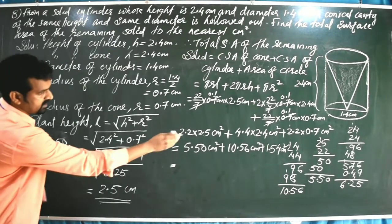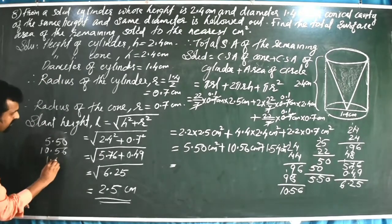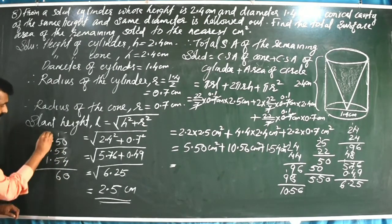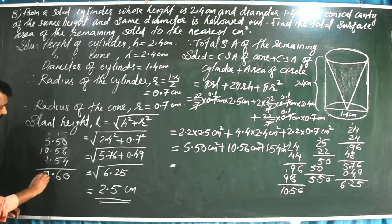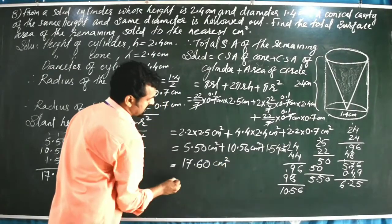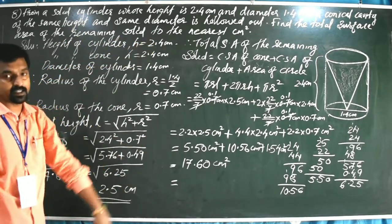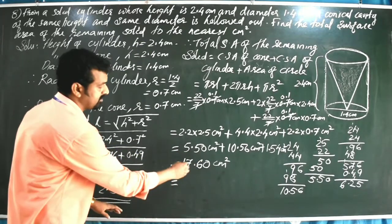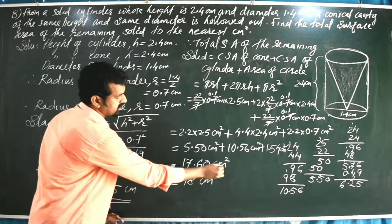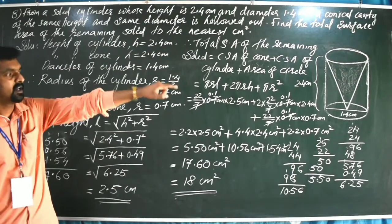Computing each term: πrl = 22 × 0.1 × 2.5 = 2.2 × 2.5 = 5.50 cm²; CSA of cylinder = 44 × 0.1 × 2.4 = 4.4 × 2.4 = 10.56 cm²; area of circle = 22 × 0.1 × 0.7 = 2.2 × 0.7 = 1.54 cm². Adding: 5.50 + 10.56 + 1.54 = 17.60 cm². To the nearest centimetre square, the answer is 18 cm².